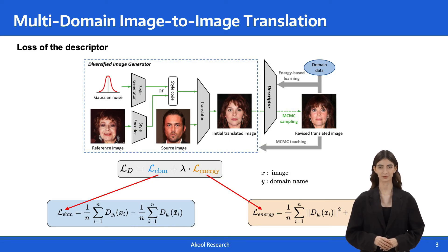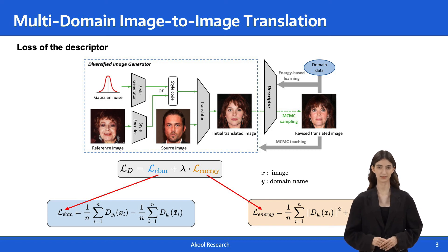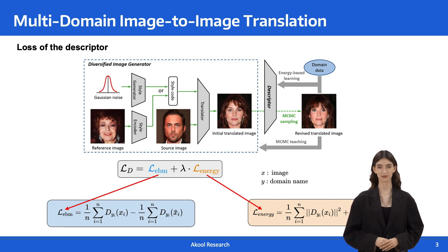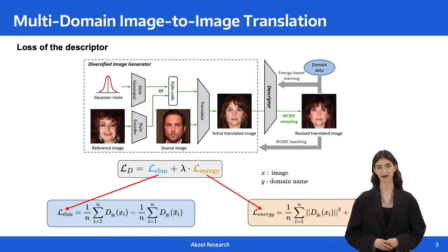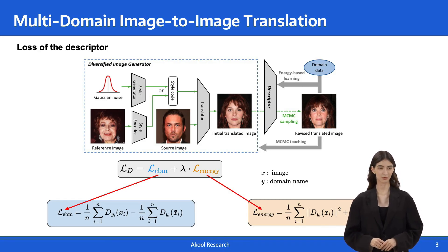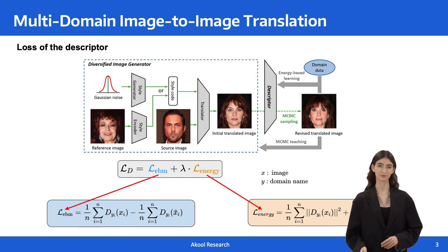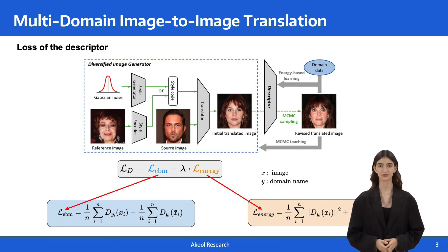We first present the loss of our descriptor, which is a multi-head energy-based model. Its loss contains a contrastive loss and an L2 norm regularization term. The contrastive loss is derived from the maximum likelihood estimation and it requires Markov-chain Monte Carlo samples. The L2 norm regularization term is added to increase the stability of the energy-based training.